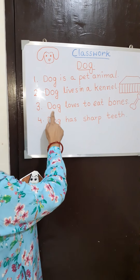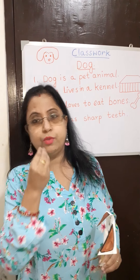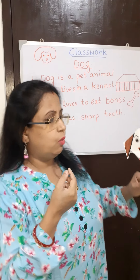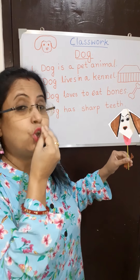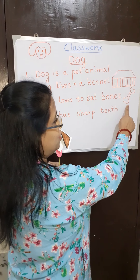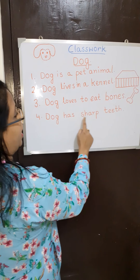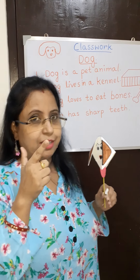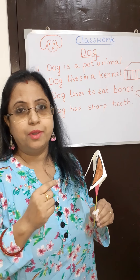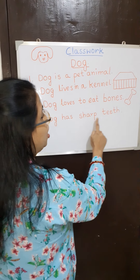Then, dog loves to eat bones. We love to eat different things — you said you love chicken, some of you like biryani. Now, what does a dog love to eat? Dog loves to eat bones. And then, dog has sharp teeth. The teeth of the dog are very sharp.